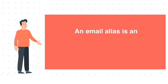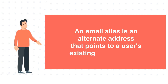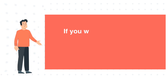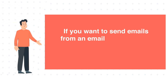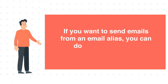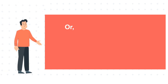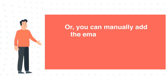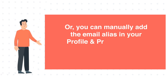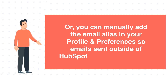An email alias is an alternate address that points to a user's existing email account. If you want to send emails from an email alias, you can do so from the CRM depending on your email provider. Or, you can manually add the email alias in your profile and preferences so emails sent outside of HubSpot can log to the CRM.